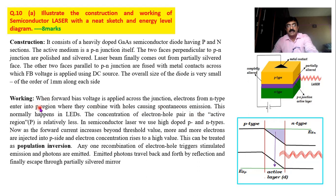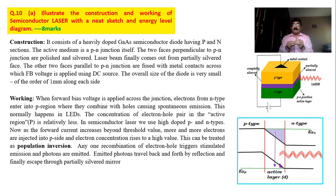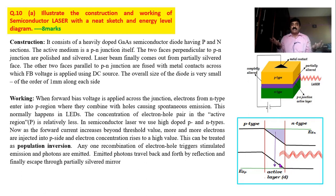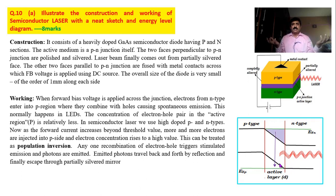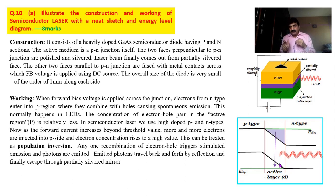When forward bias voltage is applied across the junction, electrons from n-type enter into the p-region where they combine with holes, causing spontaneous emission. The electrons from the conduction band come down to the valence band, because in the valence band there are a large number of holes. When they recombine, they emit radiation — that emitted radiation is spontaneous, and we get ordinary light. This is what happens in a light emitting diode.